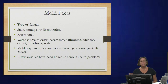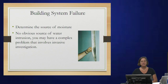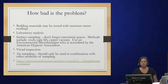Mold is all around us — it's out in the dirt right now. It plays an important role in the decaying process. Penicillin is a mold. Cheese is a mold. But a few varieties have been linked to serious health problems. Determine the source of moisture and fix it — that's step number one. Do not hide it. If needed, you could test air quality for mold, test building materials for mold, or do surface sampling.